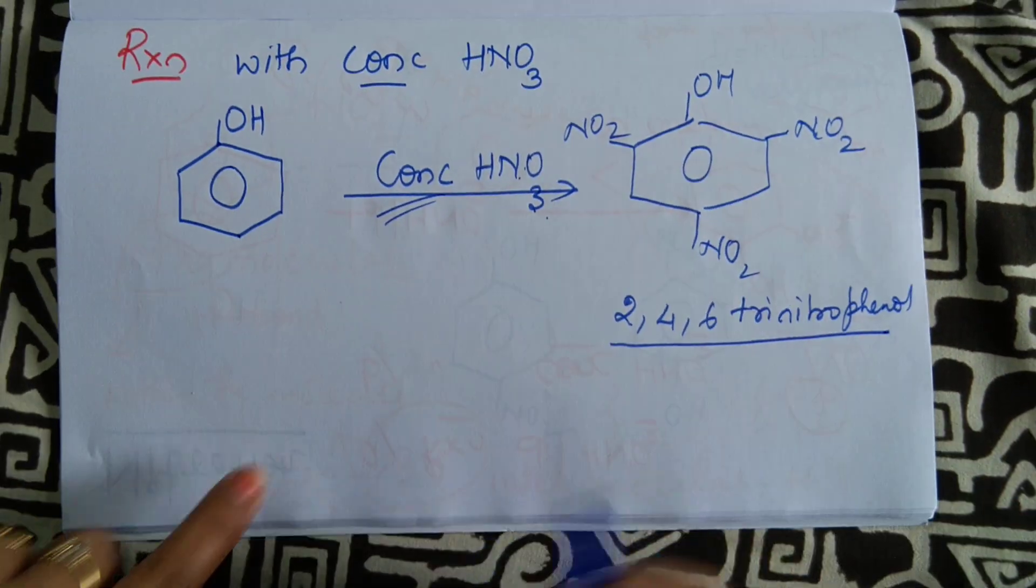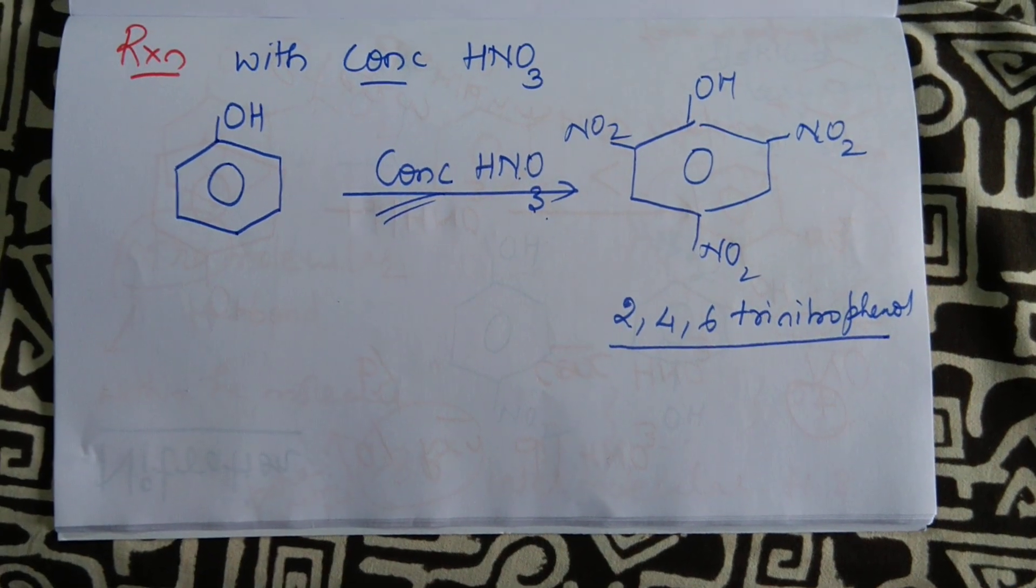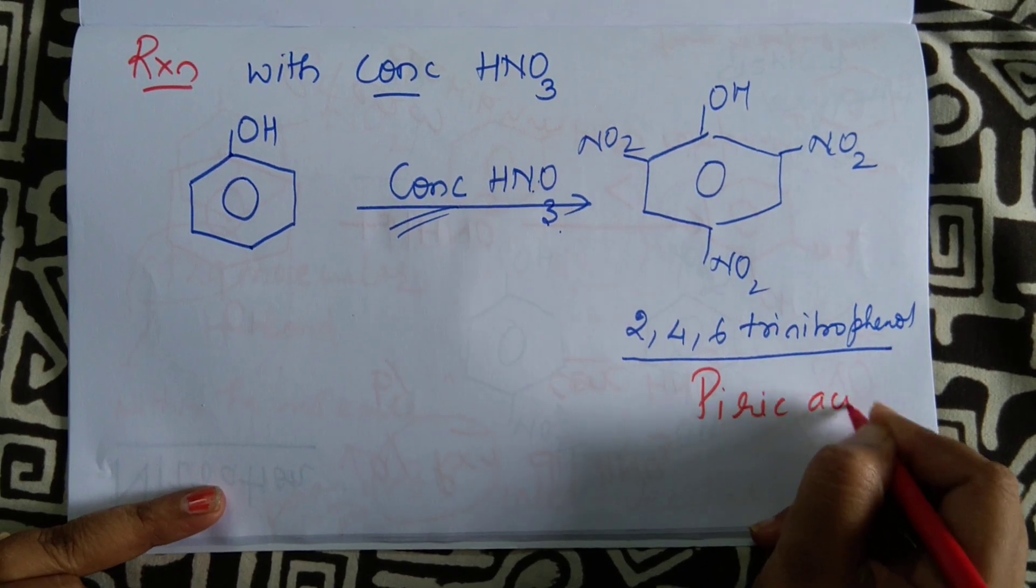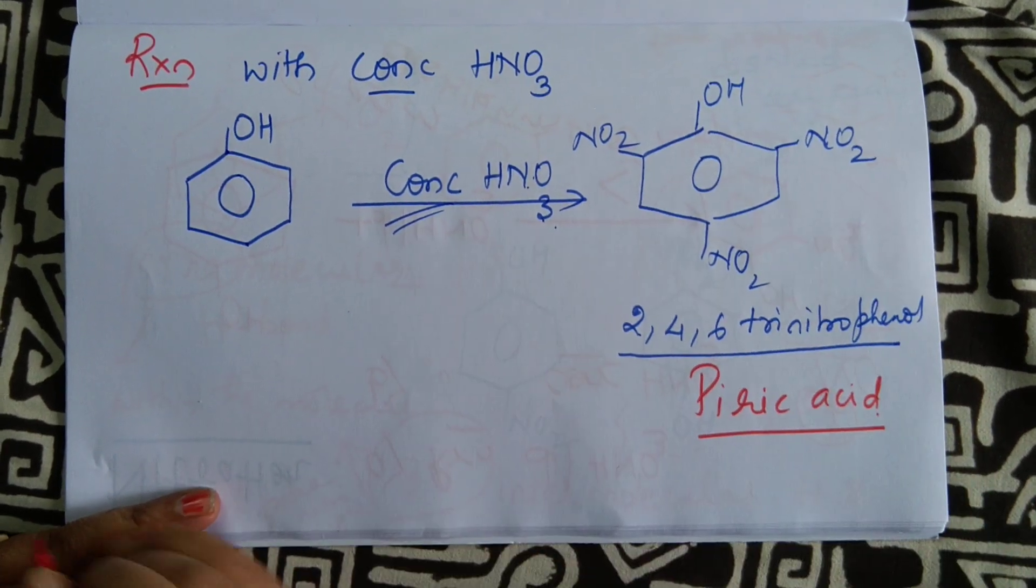And what is the common name of 2,4,6 trinitrophenol? It is called picric acid.